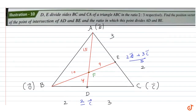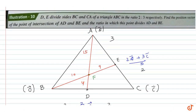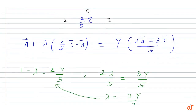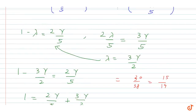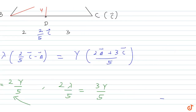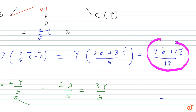To find the coordinates of the intersection point, we put gamma = 10/19 into the equation. So the intersection point F = (10/19) times (2A vector + 3C vector) / 5 = (4A vector + 6C vector) / 19. So the answer is (4A vector + 6C vector) / 19.